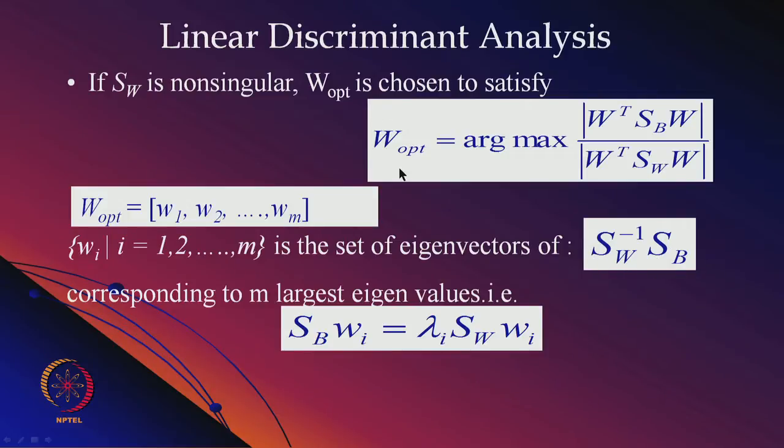We find the m largest eigenvectors of the characteristic equation: treating SW⁻¹·SB as a combined scatter matrix S, we solve for eigenvalues lambda and eigenvectors. This is why it is essential that the within-class scatter matrix SW is non-singular — you need to compute its inverse, multiply by SB, then find the corresponding eigenvalues and eigenvectors.